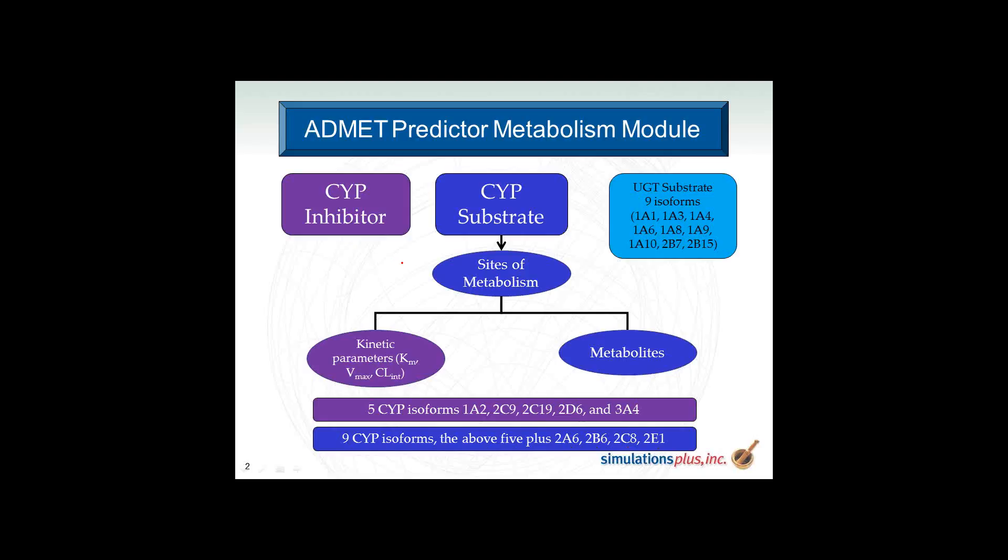Finally, we have nine models to predict if a compound is a UGT substrate. UGTs are involved in Phase II metabolism, and they would add a glucuronide to a site on the molecule — typically the OHs, NHs, etc. If there are no particular UGT sites in the molecule, the model will just report no sites.